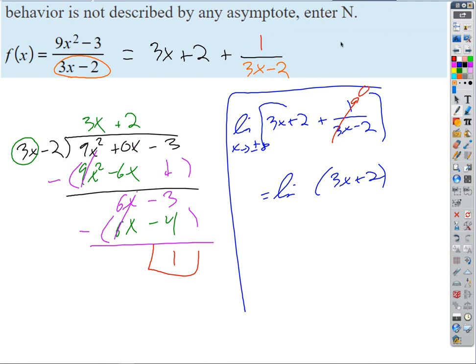So in this case, we have y equals 3x plus 2 would be our answer. Let's just look at this on Desmos.